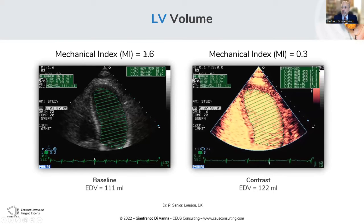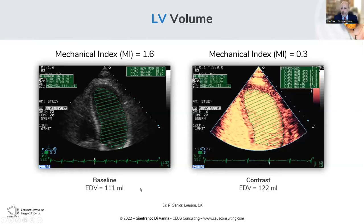Some examples: at baseline the MI is 1.6, which is the normal MI of a standard echo machine. When we switch to contrast mode it goes to 0.3, or it could be 0.1 or 0.2 depending on the target — the higher you go within the limit, the darker the myocardium; the lower you go, the less it breaks bubbles and you may see some bubbles in the myocardium. In these examples, we are measuring ejection fraction, and you can already see the difference before and after contrast — contrast gives a perfect differentiation between cavity and muscle.